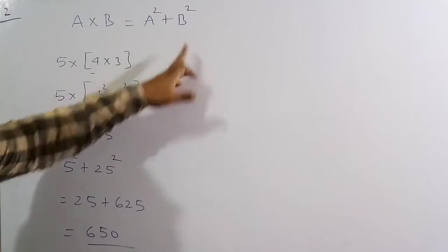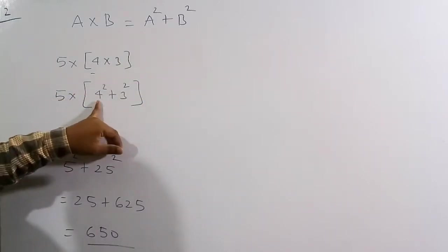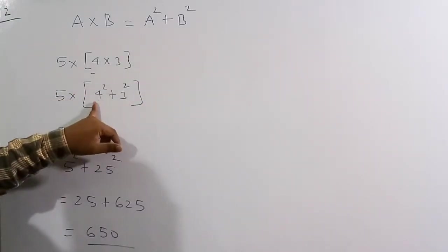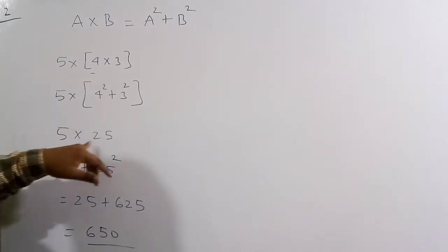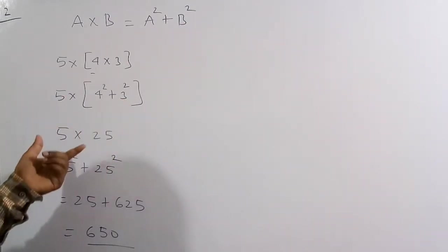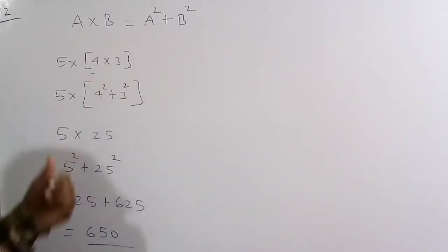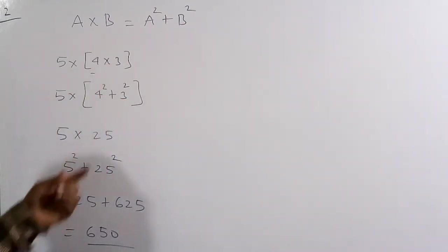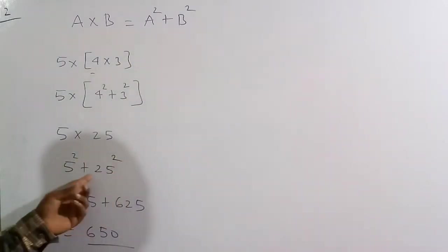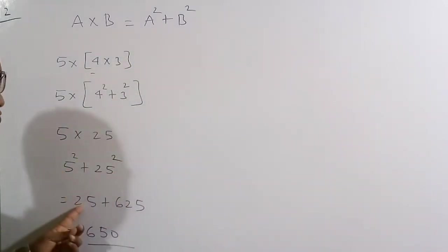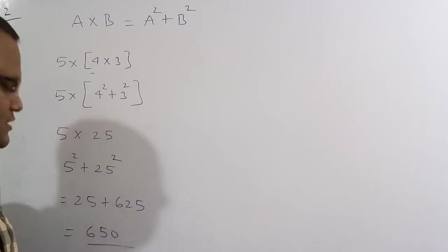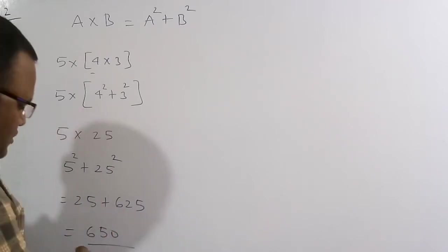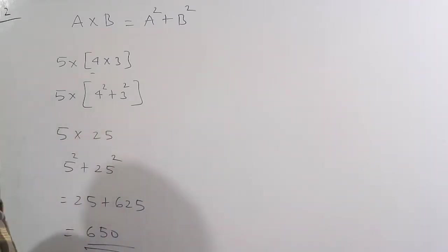4² + 3² = 16 + 9 = 25. So we now need 5 cross 25 = 5² + 25² = 25 + 625 = 650. Therefore 650 is the correct solution.